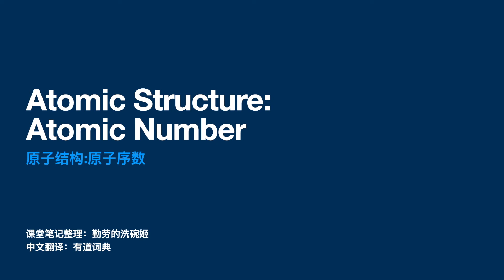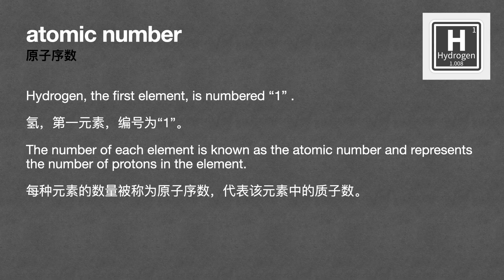Atomic Structure. Atomic Number. Hydrogen, the first element, is numbered 1. The number of each element is known as the atomic number and represents the number of protons in the element.